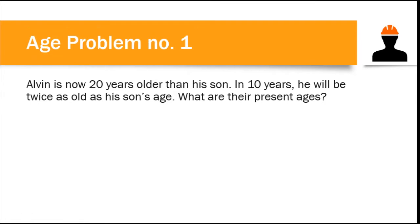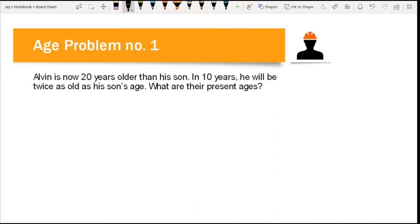Problem number one: Alvin is now 20 years older than his son. In 10 years, he will be twice as old as his son's age. What are the present ages? The best way to solve age problems is by using a table. We have the son's age and Alvin's age as rows, with columns for the present and future periods — in this case, 10 years from now.